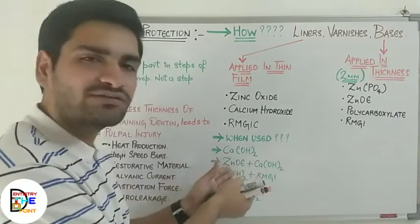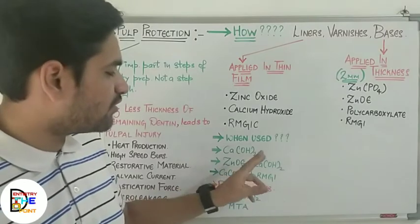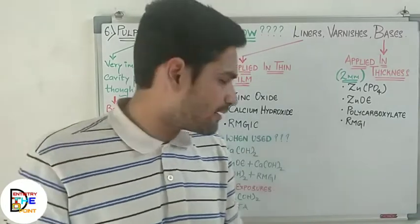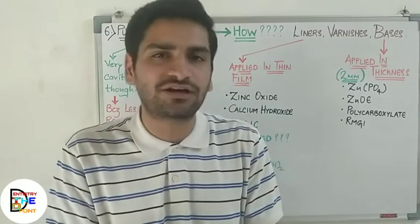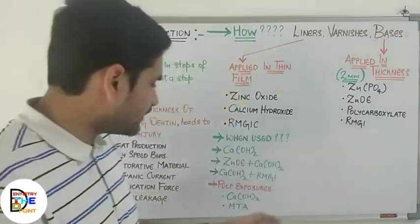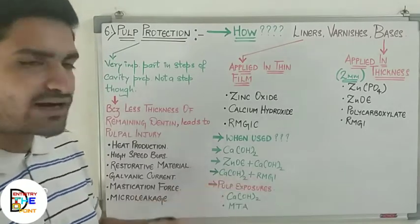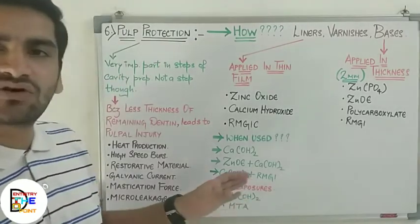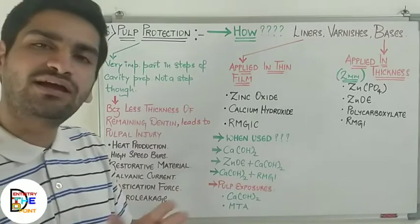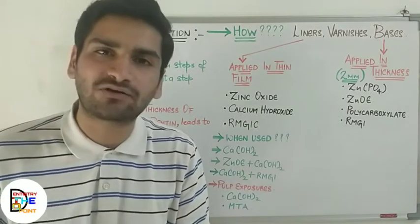So zinc oxide eugenol or calcium hydroxide can be used as liners in amalgam restoration — to resist the condensation forces of the restorative material and to insulate the thermal changes which are initiated. Next, calcium hydroxide plus resin modified GI is also used in composite restoration. You need to cover the calcium hydroxide if you are doing a composite restoration and you are very close to the pulp — you will certainly place calcium hydroxide for the formation of reparative dentine.